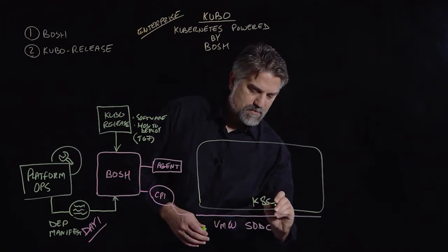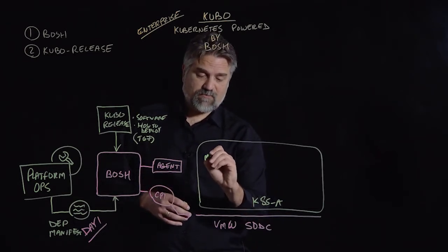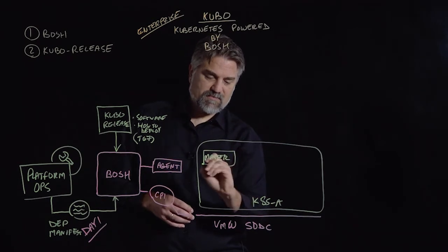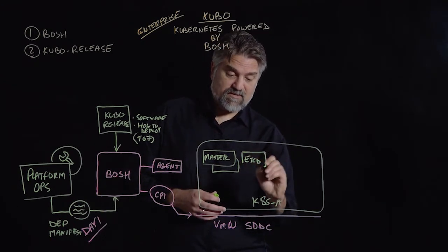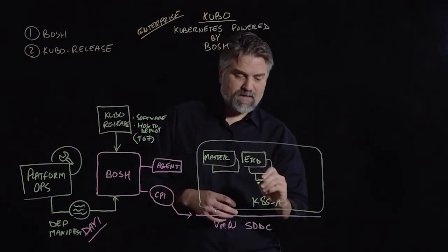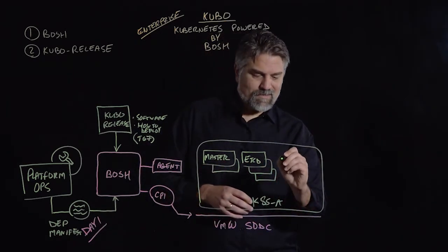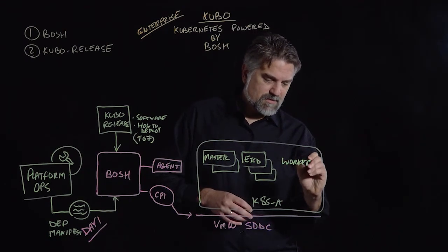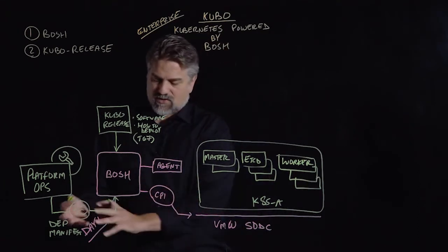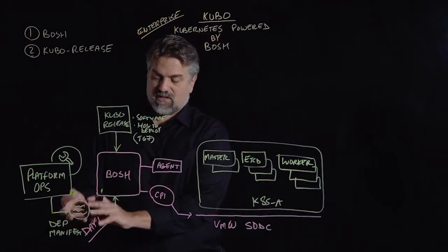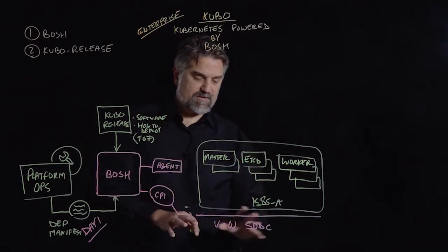We'll call it K8s cluster A. In our deployment manifest YAML, we could tell BOSH things like: we want to have multiple master nodes — we want high availability, not a single master node scenario. We also want multiple etcd nodes, because etcd is the key-value store that really lets Kubernetes function at scale. We might deploy three of those, since it's a majority-node quorum set requiring an odd number. And finally, the workers — the nodes actually running the kubelets, pods, and containers — we might deploy three workers in our cluster.